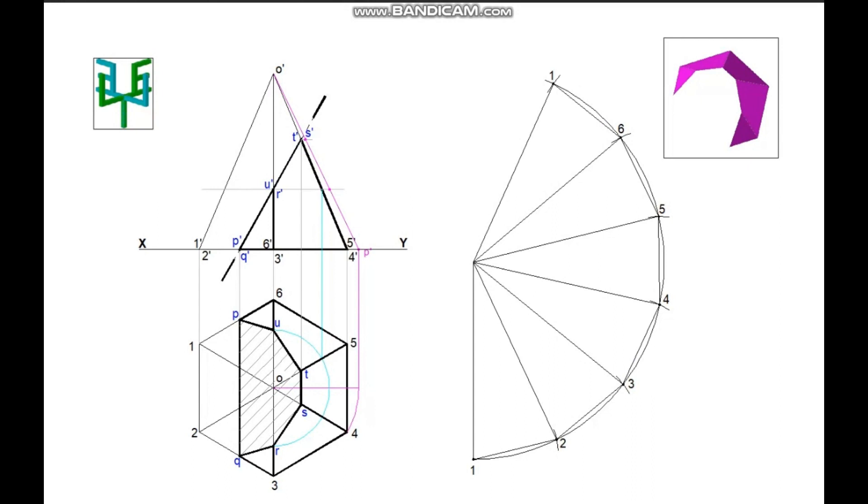Now we have to transfer all the points of section to the corresponding edges of the development part. For transferring the points of the base from the plan, measure the distance of 1P. Mark it on the corresponding line 1 to 6 of development. Measure the distance of 2Q. Mark it in between 2 to 3.